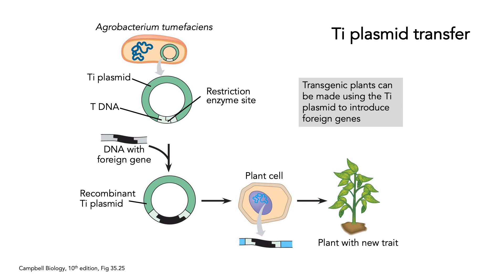So how does Ti plasmid transfer work? You've got Agrobacterium tumefaciens with the Ti plasmid containing the T-DNA, which has restriction enzyme sites in it. What we can do in the laboratory is include a recombinant gene — a foreign gene from some other organism — into the T-DNA region of the Ti plasmid. You can insert that recombinant plasmid into the plant cell, and then because you can grow entire plants from a single cell, you can generate a plant with a new trait or a new gene you want to study.